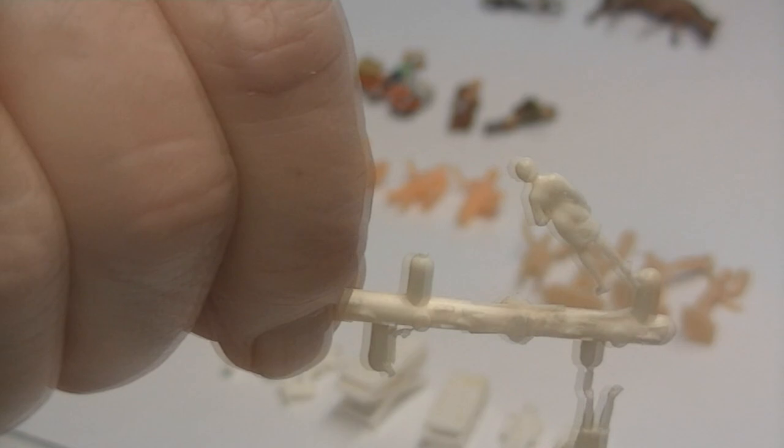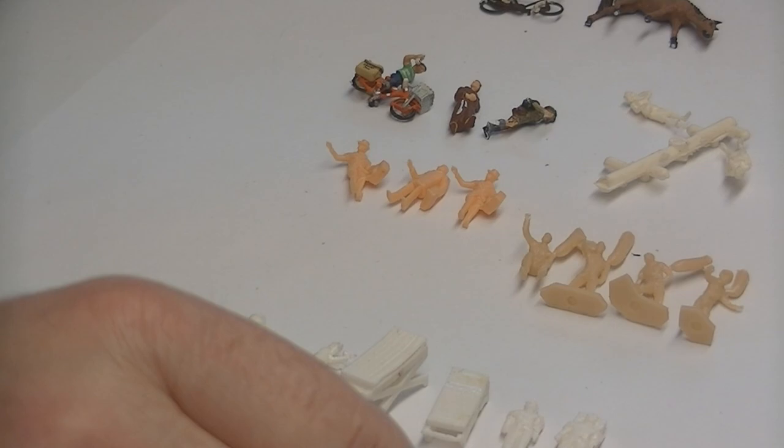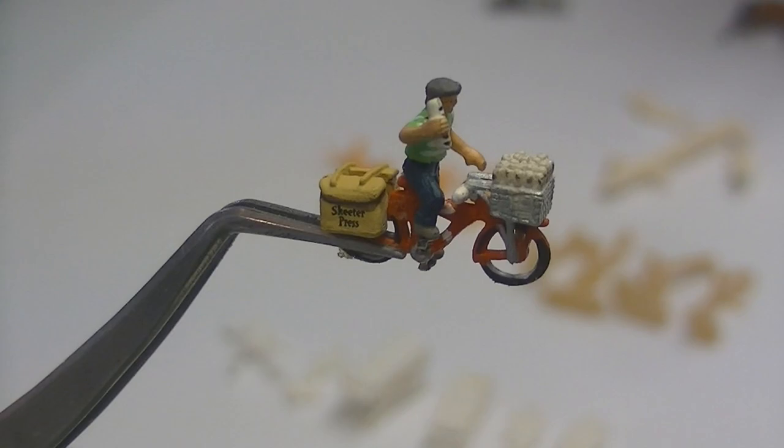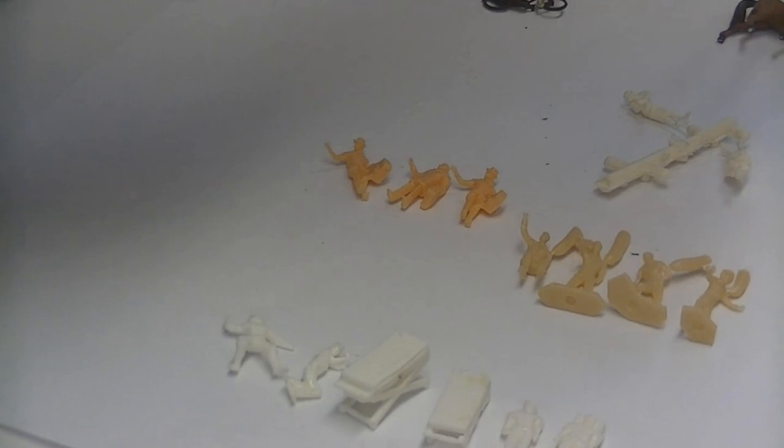To populate them, we will use small figures that come from different suppliers. A good example of a figure that looks good is that bike with that person on it, all pre-painted.